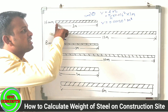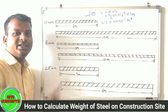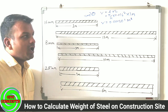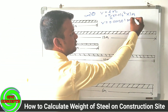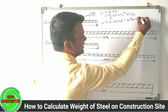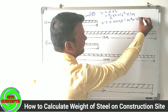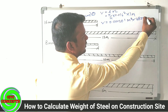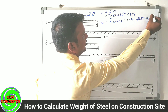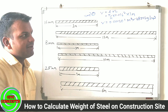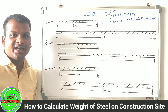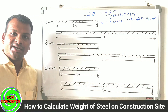This volume gives us the volume of steel for 1 meter length. If we multiply this by the density of steel, the density is 7,850 kg per cubic meter.